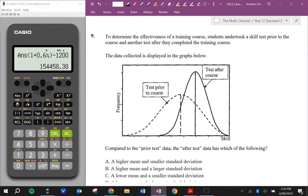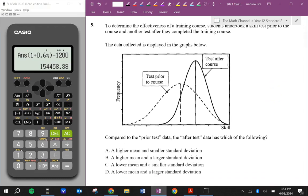To determine the effectiveness of a training course, students undertook a skill test prior to the course and another test after they completed it. Compared to the prior test, the after test data has which of the following? A higher mean and a smaller standard deviation. That's, I would probably say that's true. Because the test after the course has a lower spread. Whereas the other one has a much higher spread. So that means that it will have a smaller standard deviation. You can also see that it has a higher mean, a higher average, because all the scores lie higher compared to this one. So I'm going to say the answer to this one would be A.